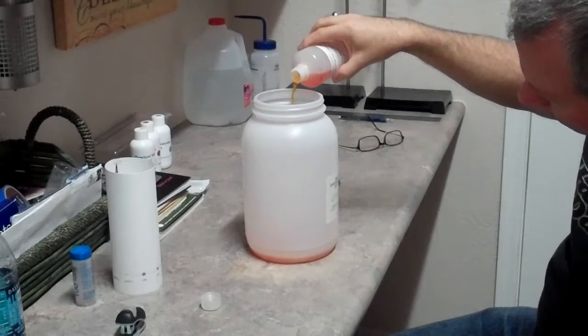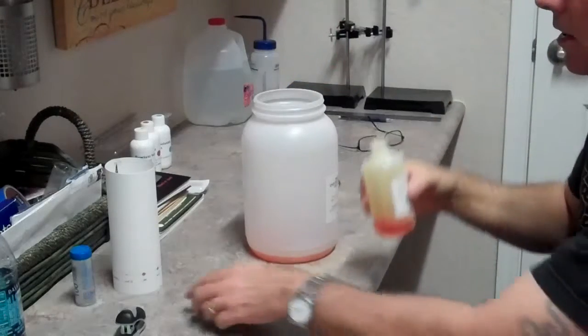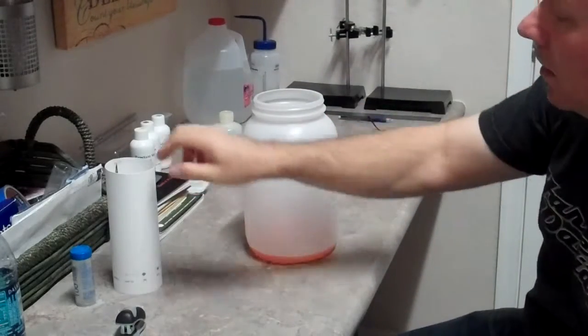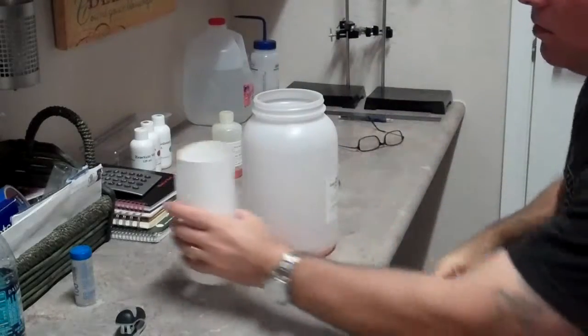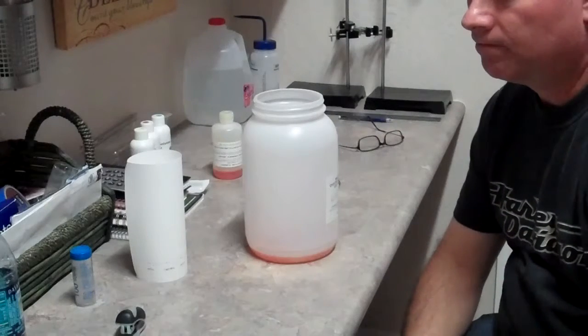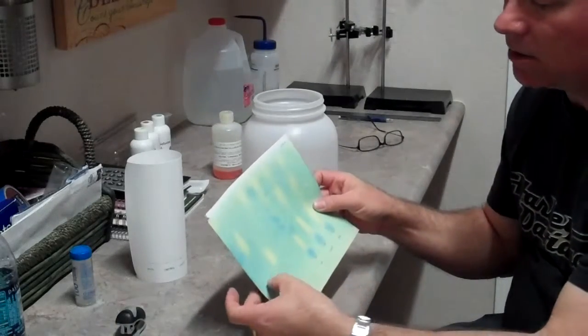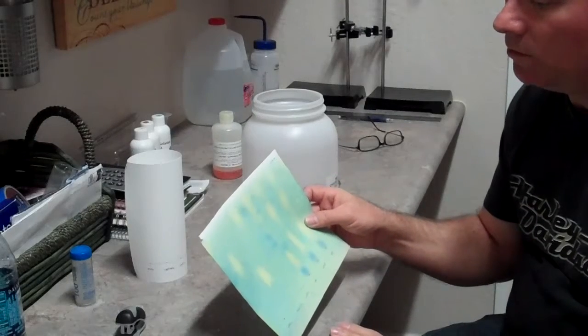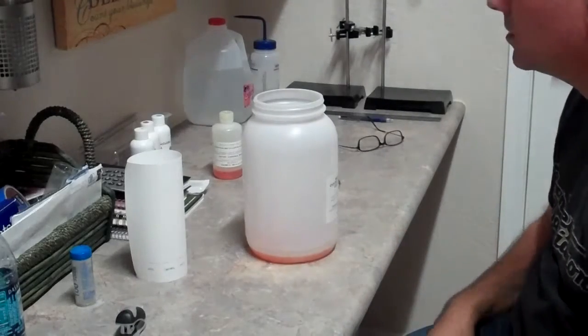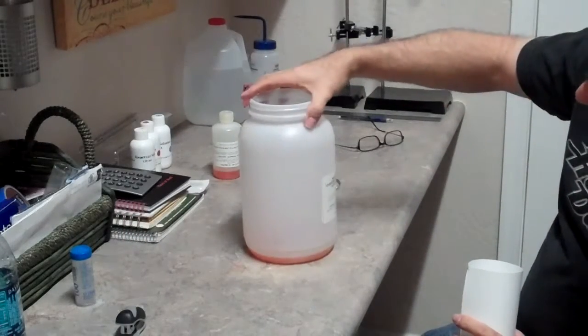This solvent is reusable, so whatever doesn't soak into your paper can be poured back into the container and reused. The solvent shelf life seems to be fairly long. You can always tell when the solvent is going bad because when your paper develops, instead of having this blue-green background, it will be basically an orange background.